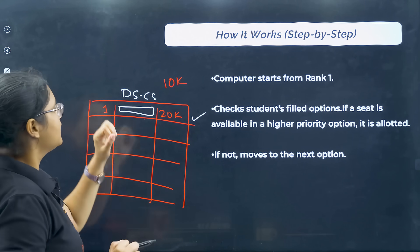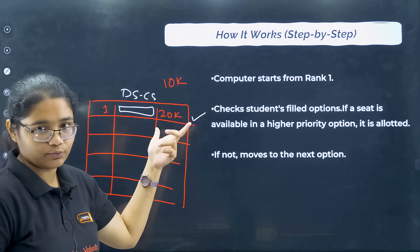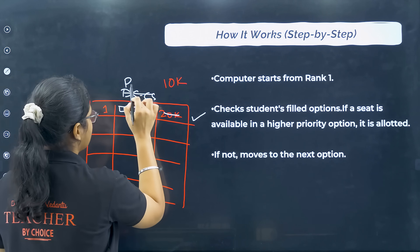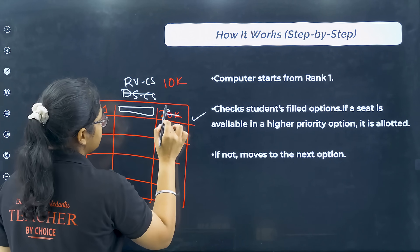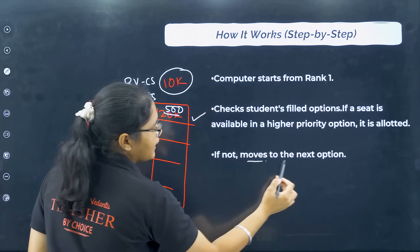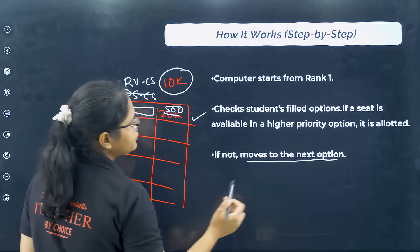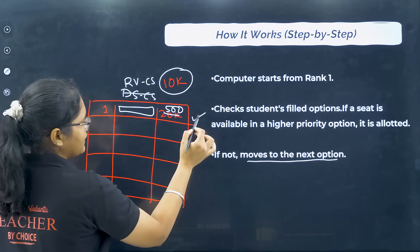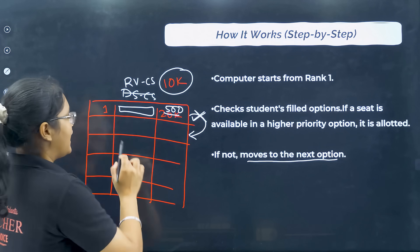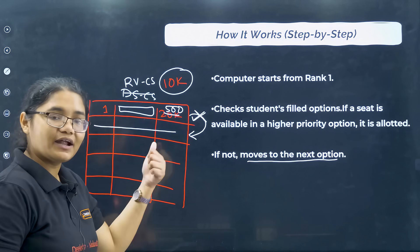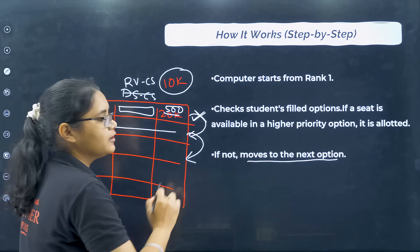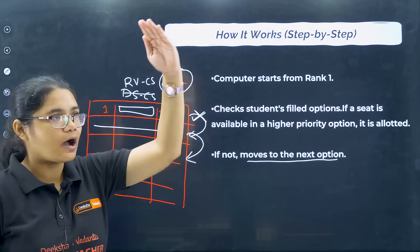If the conditions are met, the seat is allotted to you. For example, if you have added RV College whose cutoff is 500 and your rank is 10,000, you are not getting that. So the computer moves to the next option, checks if that is available, allots it if so, and if not, moves to the third option. It goes from top to bottom through your list.